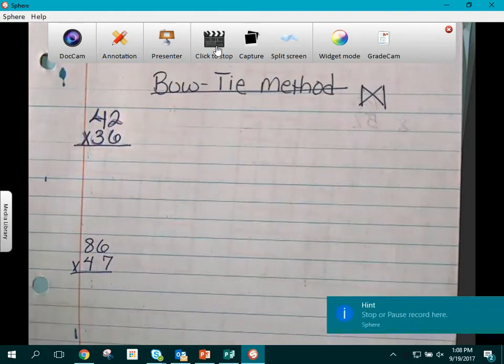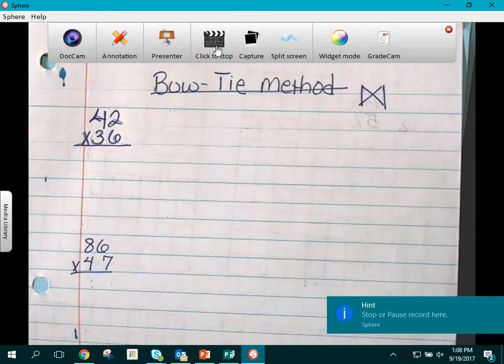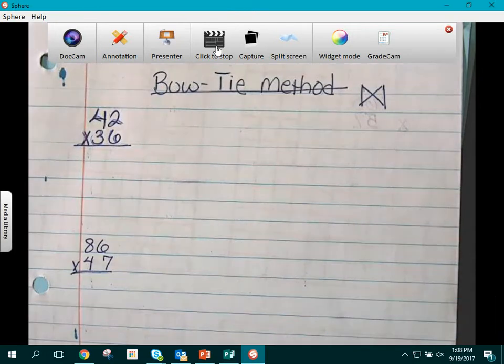Today we're going to be reviewing the Bow-Tie Method. This is another strategy to use for solving multiplication problems.